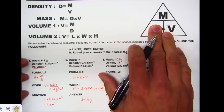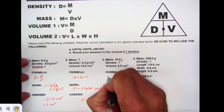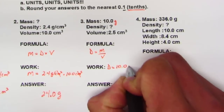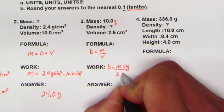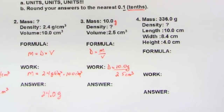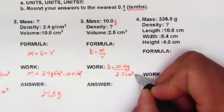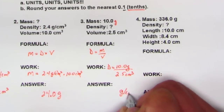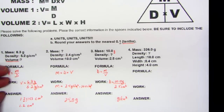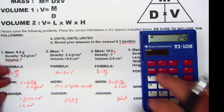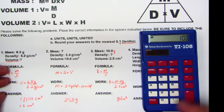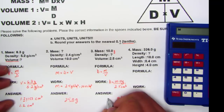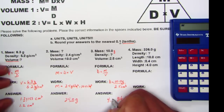Now let's solve for density. Cover up D in the triangle — D equals M over V. Plug in the work: D equals 10.0 grams divided by 2.5 cubic centimeters. At this point there are no like units to cancel, so you write the unit as grams over cubic centimeter. Type 10.0 divided by 2.5 into the calculator, and it gives a whole number of 4. Write it as 4.0 grams per cubic centimeter.